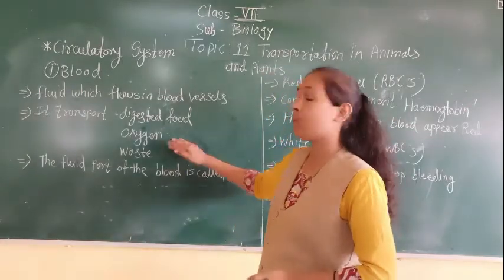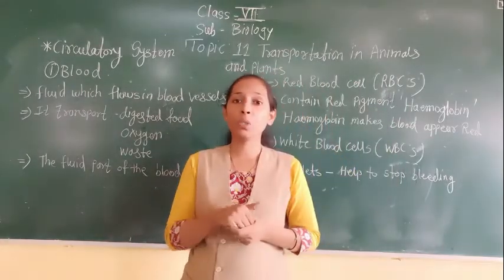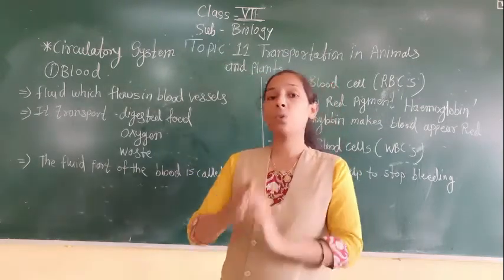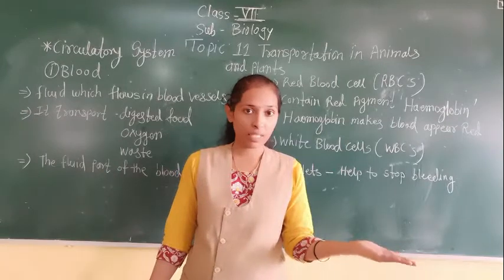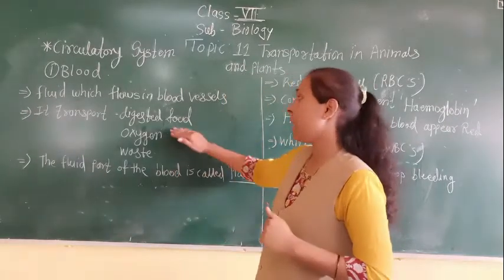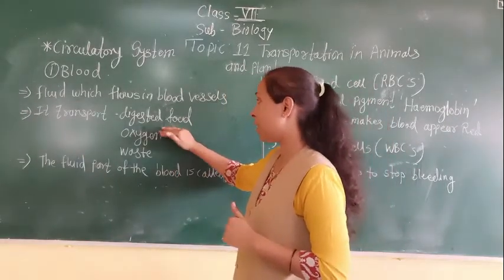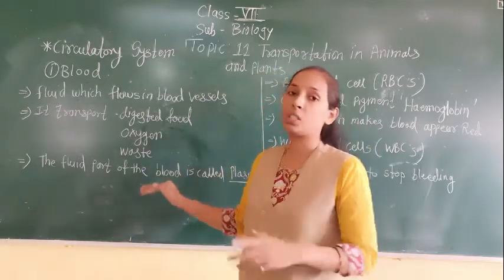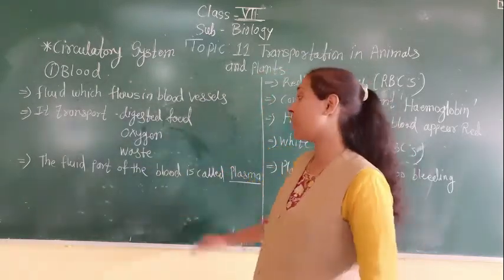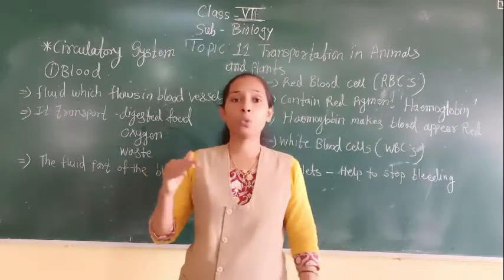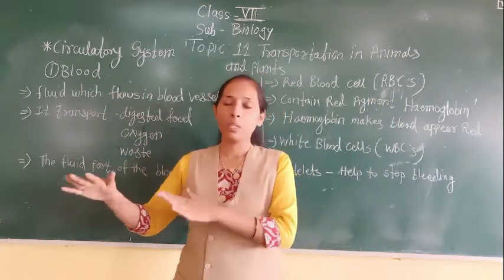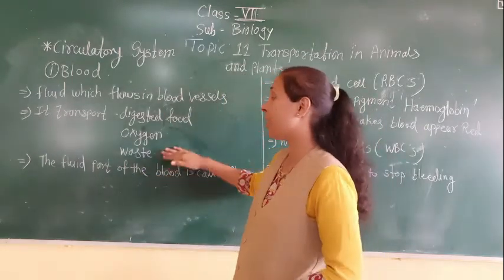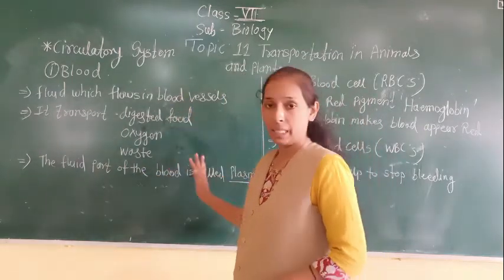Blood also helps to transport the oxygen which we inhale during inhalation into the lungs, and through the lungs it goes to the different body parts, as we have seen in our previous lesson. In this way, blood transports digested food from the small intestine, oxygen from the lungs, and waste materials to the different excretory organs.